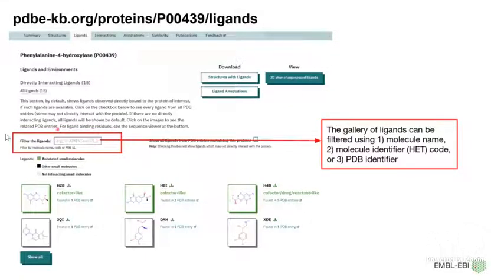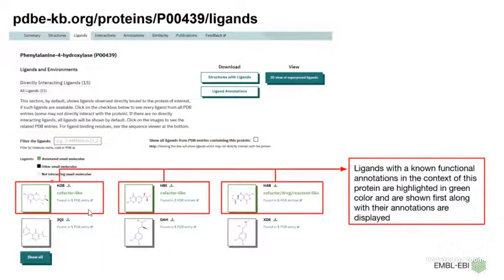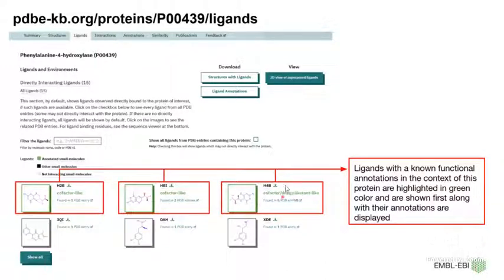You can filter your ligands list or gallery using molecule name, PDB ID, or even the three-letter code of the ligand. We highlight the ligands with known functional annotations in green, and the data for them is shown first. These annotations can vary from cofactor, which comes from our cofactor pipeline. We also map to DrugBank and RIA database in order to annotate ligands as drug and reactant-like respectively.